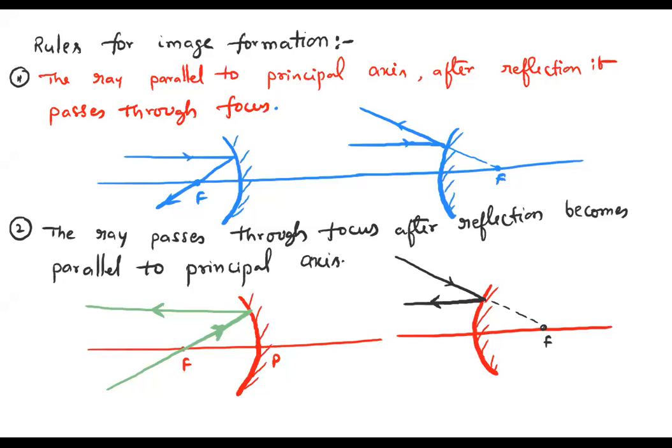If any two rays are passing through that point, the rest of the rays must and should pass through that point as well. That's why we take some specific rays which are useful for us, make them pass through one point, trace where they are meeting, and say that is the image of the object.